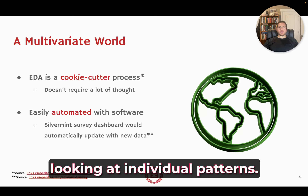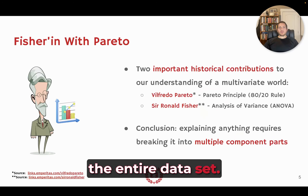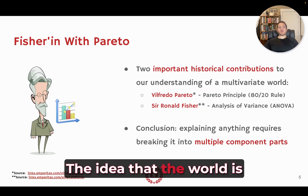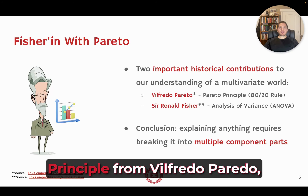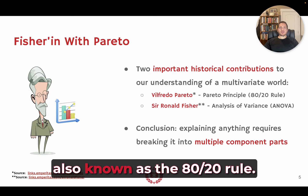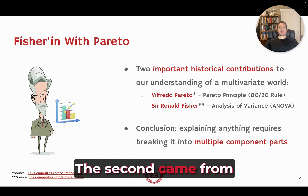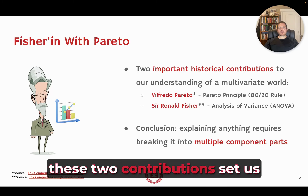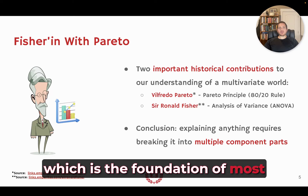You're going metric by metric, looking at individual patterns. Now you need to step back and look at patterns across the entire dataset. Once you move into a world of multivariate analysis, things get more complicated. The idea that the world is multivariate had two important contributions around the 20th century: the Pareto Principle from Vilfredo Pareto — the 80-20 rule — and contributions from Sir Ronald Fisher. These two set us on the path to analysis of variance, which is the foundation of most multivariate analysis.